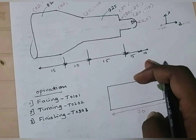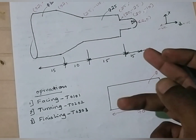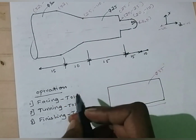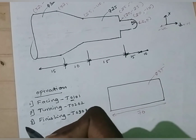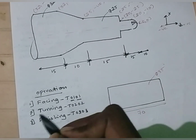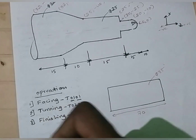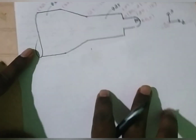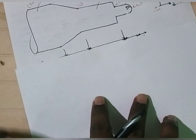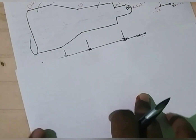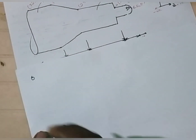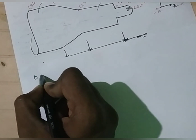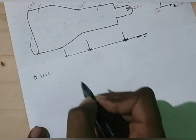For the turning operation, the code for tool is T followed by a 4-digit number. The first two digits indicate the turret number. The last two digits indicate the tool number. Now, let us write the program. The program starts with O. O indicates the program number. The program number may be anything. Here, I am going to assume 1111.